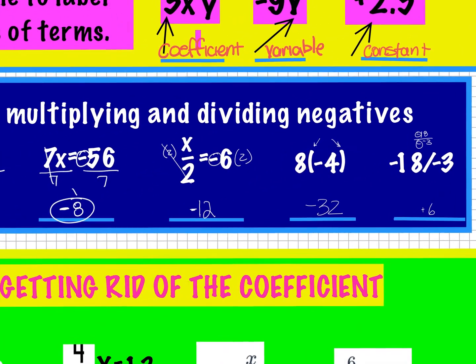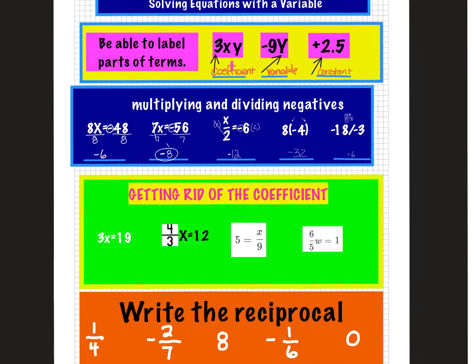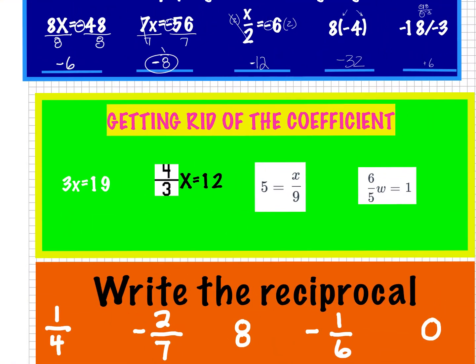Getting rid of the coefficients — these are always the last step of these algebra problems. Getting rid of the coefficient, or the number in front of the variable, will always involve multiplication or division. So here, 3x equals 19. We divide by 3 on both sides. X equals 19 thirds — there's nothing we can simplify there.